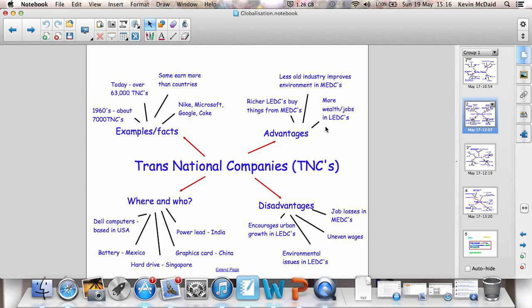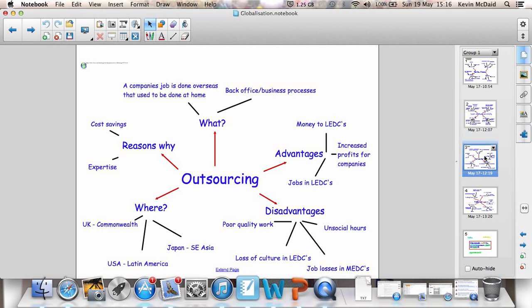Dell is an American company, but the battery for the computers are made in Mexico. The hard drive in Singapore. The graphics card in China. The power lead is made in India, for instance. So, that's essentially the global nature of transnational corporations.